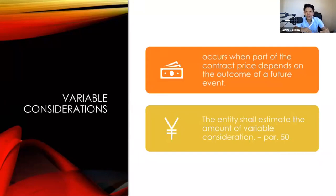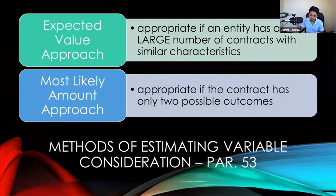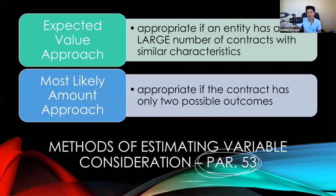You should not wait for that future event to happen, because according to paragraph 50 of IFRS 15, the entity shall estimate the amount of variable consideration. You should recognize revenue now, and to do that, you need to estimate the transaction price. In estimating it, paragraph 53 of IFRS 15 provides two methods: the expected value approach and the most likely amount approach.